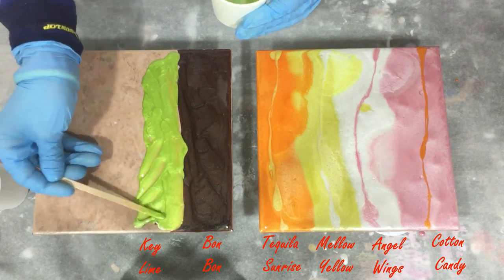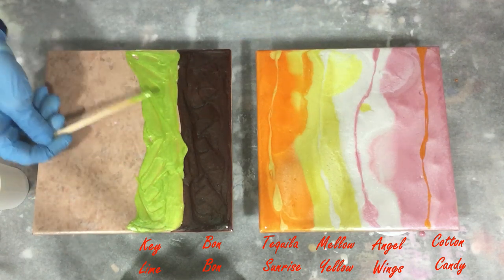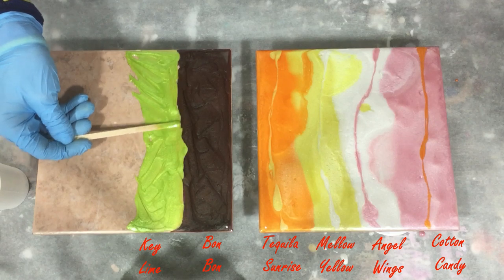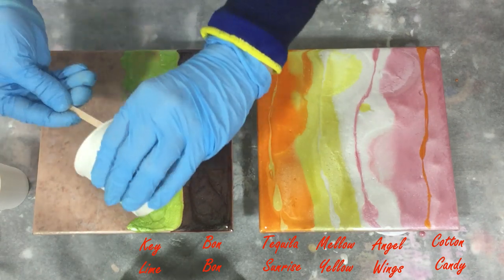The next color is a very nice green bright color called Green Lime. It has a little bit of a yellow sheen over it. I like it very much, it's very bright.